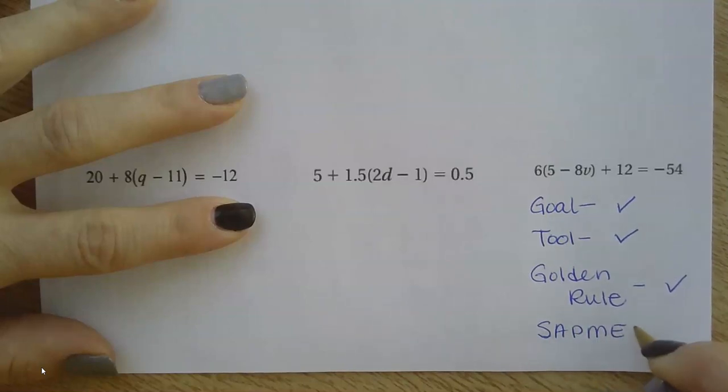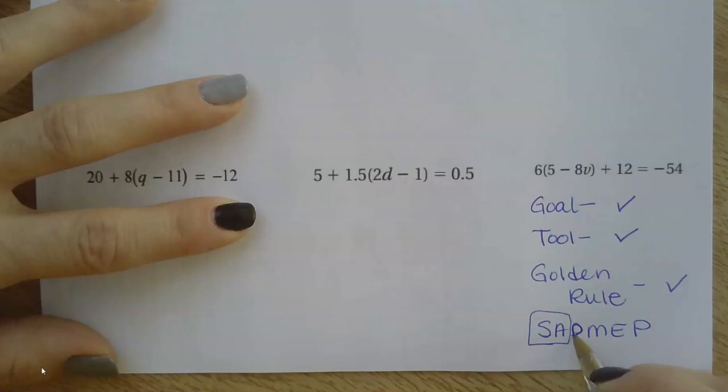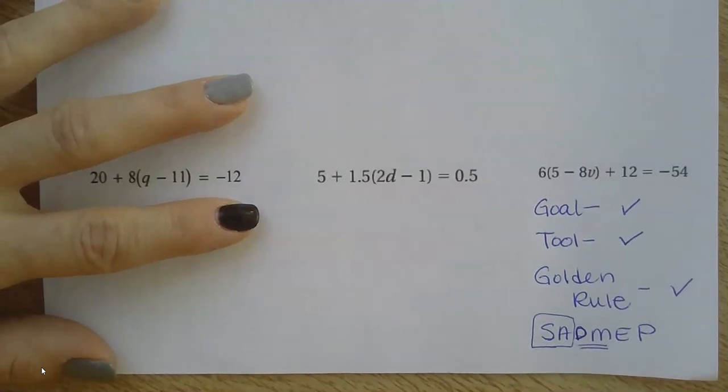So when we get down to it, we're canceling out any adding and subtracting first. That's AD. Any adding and subtracting first before we cancel out any multiplication or division.